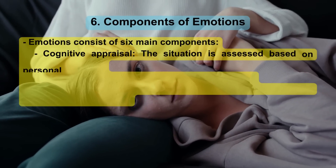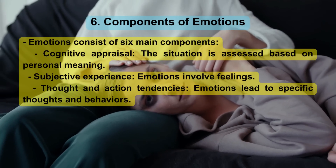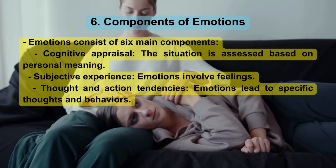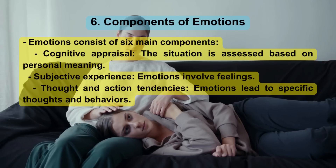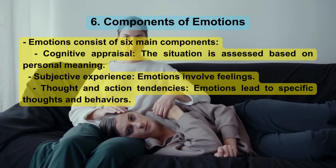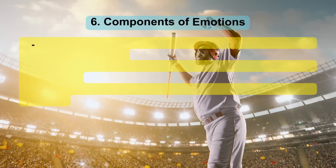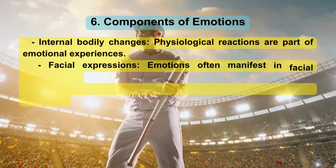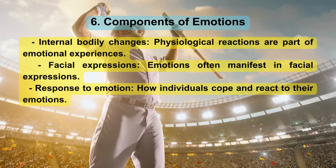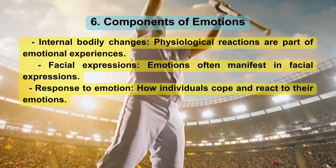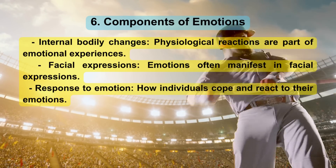Components of Emotions. Emotions consist of six main components: cognitive appraisal — the situation is assessed based on personal meaning; subjective experience — emotions involve feelings; thought and action tendencies — emotions lead to specific thoughts and behaviors; internal bodily changes — physiological reactions are part of emotional experiences; facial expressions — emotions often manifest in facial expressions; and response to emotion — how individuals cope and react to their emotions.